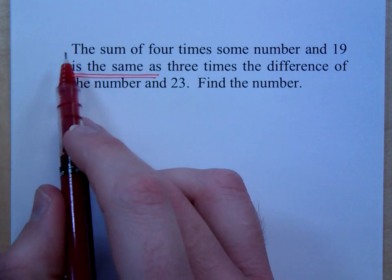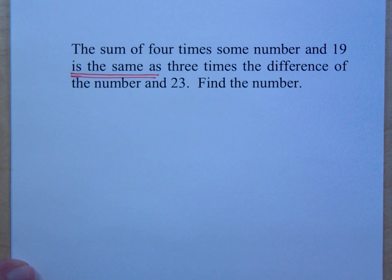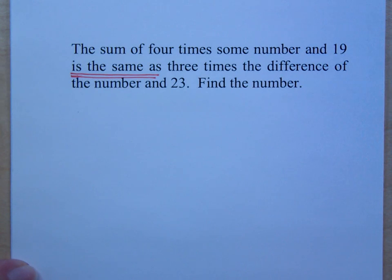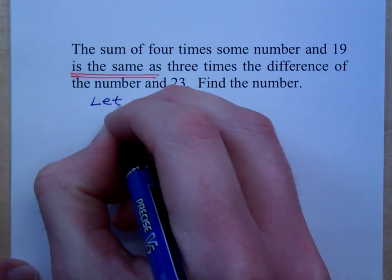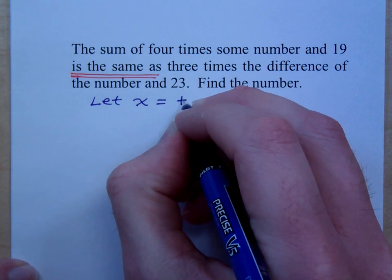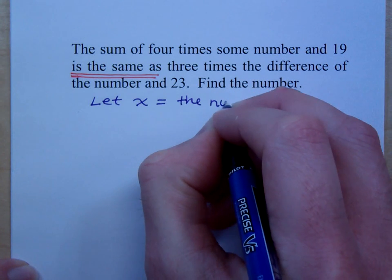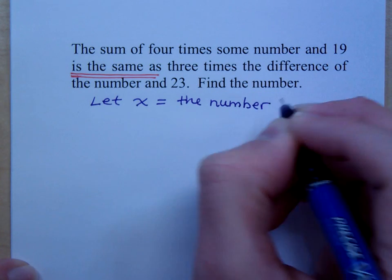So before that — this first phrasing right here, the sum of 4 times some number and 19 — we just did stuff like this. But before I get there, I'm jumping ahead. I'm about to start talking about x's and all this stuff, but I haven't even defined x. So this is where we need to stop and say that we're going to let x be the number — some number, the missing number, it doesn't matter.